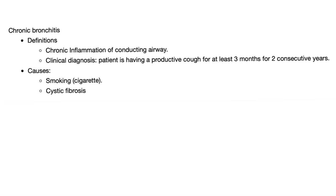Chronic bronchitis — definition. It's a chronic inflammation of the conducting airway. So it's in the conducting zone — not in the respiratory zone and alveoli. That's emphysema, not chronic bronchitis. Chronic bronchitis is more proximal.